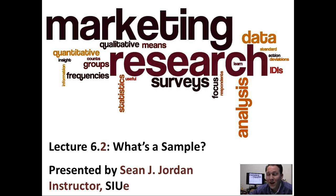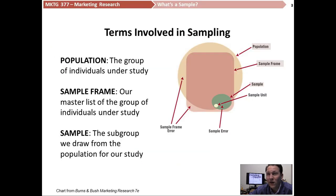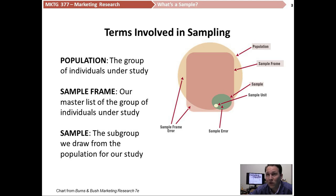Whenever we quantify anything, we're going to start with a definition of what's called a population. In this case, our boxes of cookies would be our population. It's a term that describes whatever it is that we're going to study in broad terms. We often use it to talk about people, but it's a broader term than that — it's meant to describe anything that we're studying.